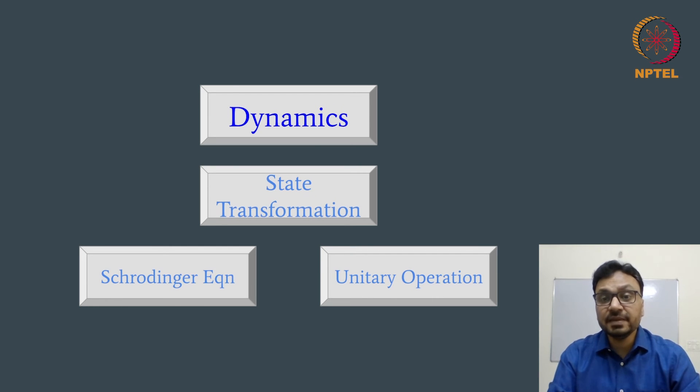Next postulate is about the dynamics or more generally the state transformation of the quantum state. The dynamics of the quantum state is governed by Schrodinger equation, where the Hamiltonian of the system becomes the generator of the time evolution. In general in quantum mechanics, the state transformation is governed by unitary operators, that is all the physical transformations of the state of a quantum system must be the result of the action of some unitary operator.